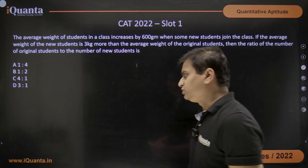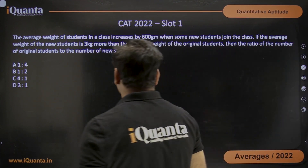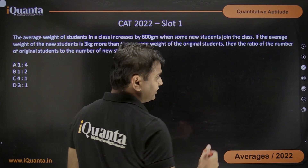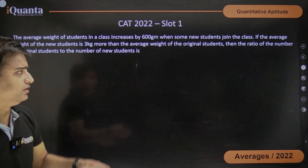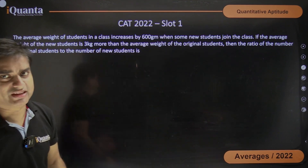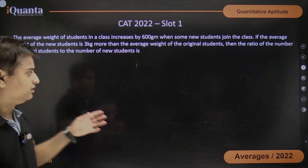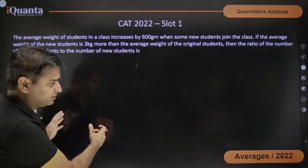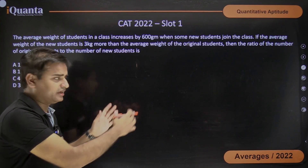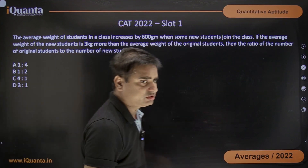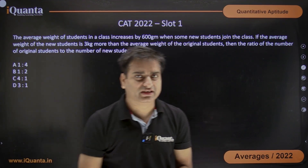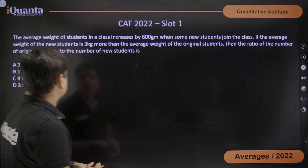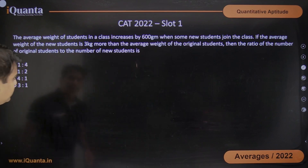It's a very simple question of averages. We can solve it with two different methods — I will cover it with the traditional method and with the shortcut of allegation and mixture. Let's begin with the traditional method first.